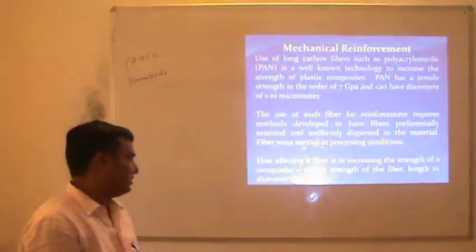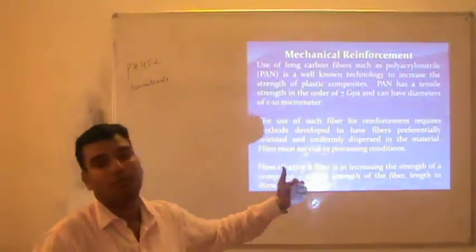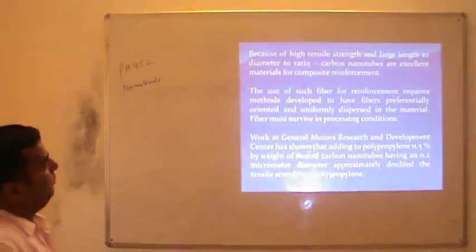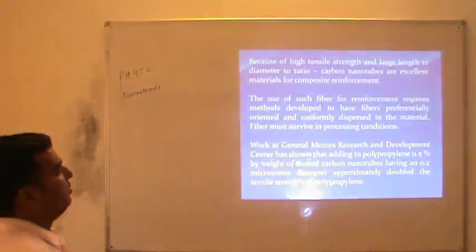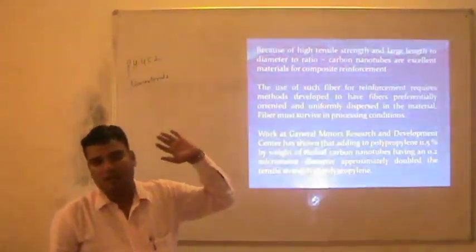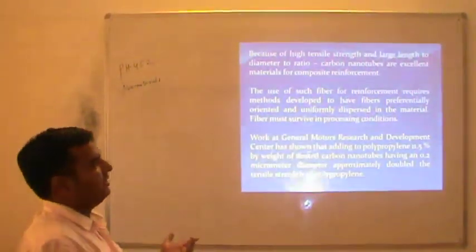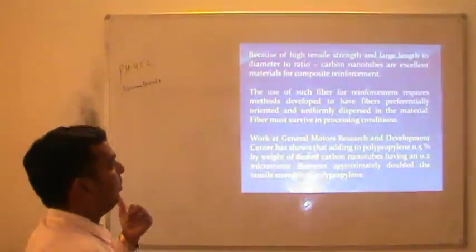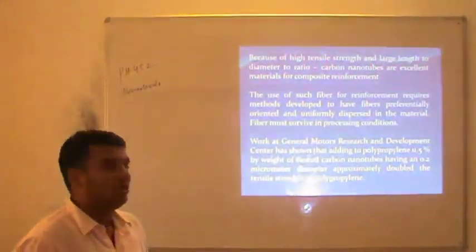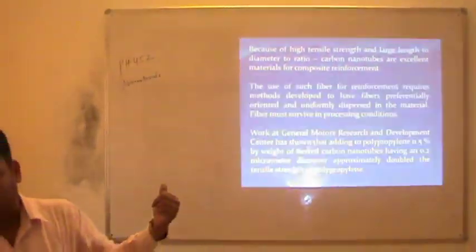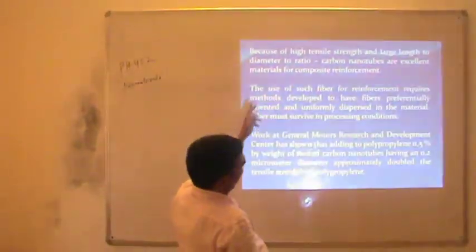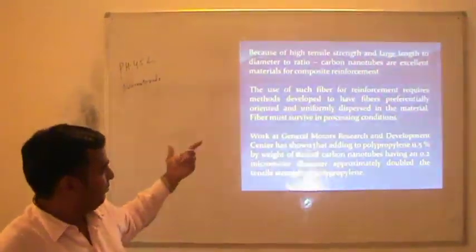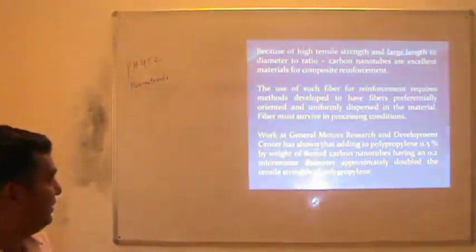The tensile strength of the fiber, and its length-to-diameter ratio, are properties which are increased by adding carbon fibers to polyacrylonitrile. Because of their high length-to-diameter ratio, carbon nanotubes are an excellent material for composite reinforcements. Carbon nanotubes have mechanical strength comparable to diamond. The use of such fiber reinforcements requires method development to have fibers continuously oriented and completely dispersed in the material — and the fiber must survive in processing conditions. If the synthesis is performed carefully, with fibers properly incorporated inside the nano-polymer, then it is easy to enhance the properties of the material.